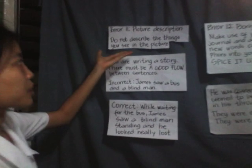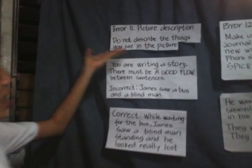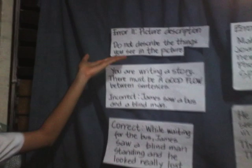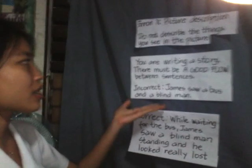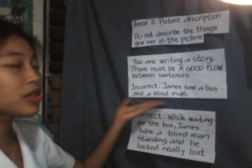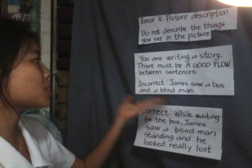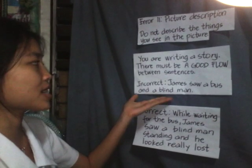Next error: we have the picture description. Do not describe the things you see in the picture. You are writing a story. There must be a good flow between senses.